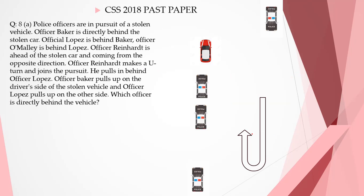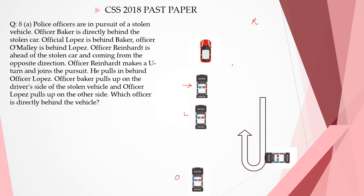Police officers are in pursuit of a stolen vehicle. Officer Baker is directly behind the stolen car. Officer Lopez is behind Baker. Officer O'Malley is behind Lopez. Officer Reinhardt is ahead of the stolen car and coming from the opposite direction. Officer Reinhardt makes a U-turn and joins the pursuit, pulling in behind Officer Lopez.